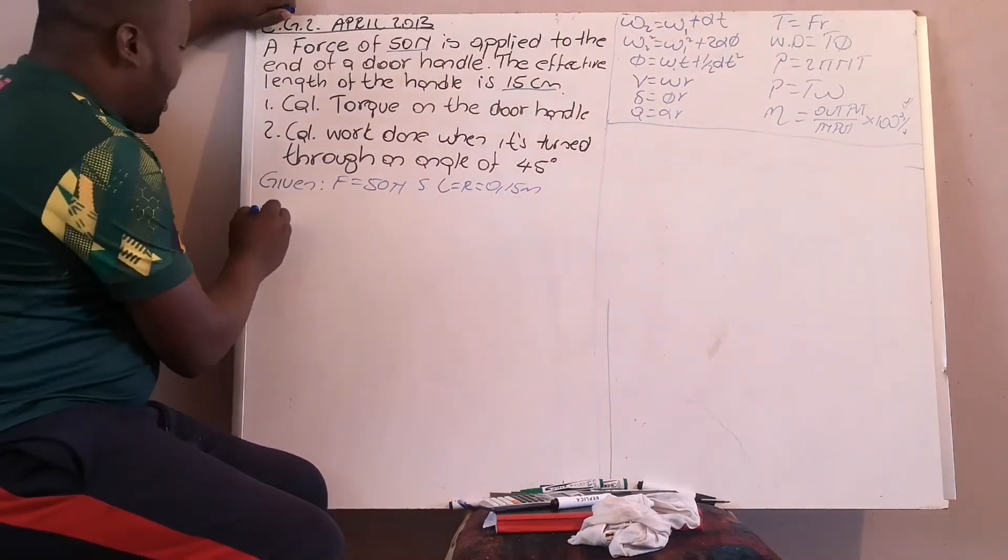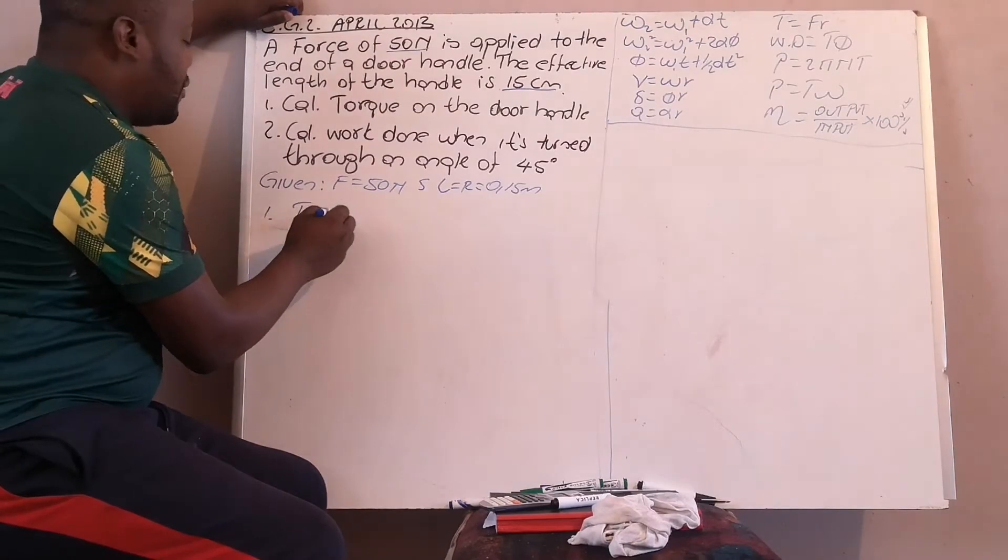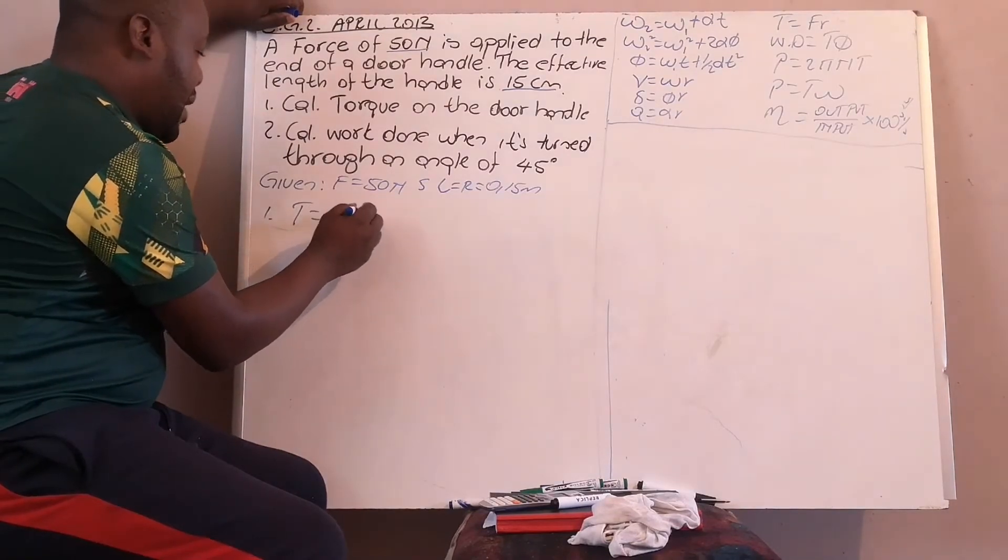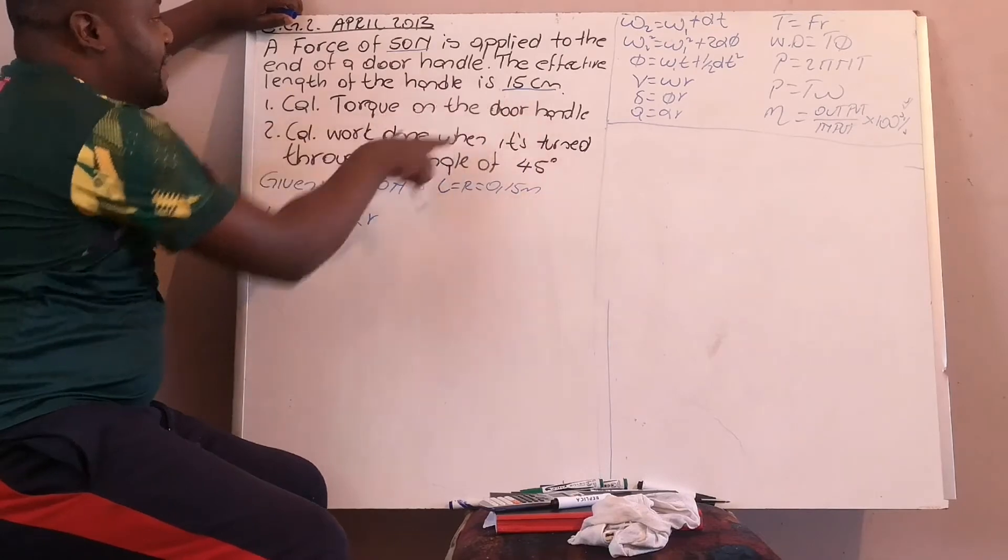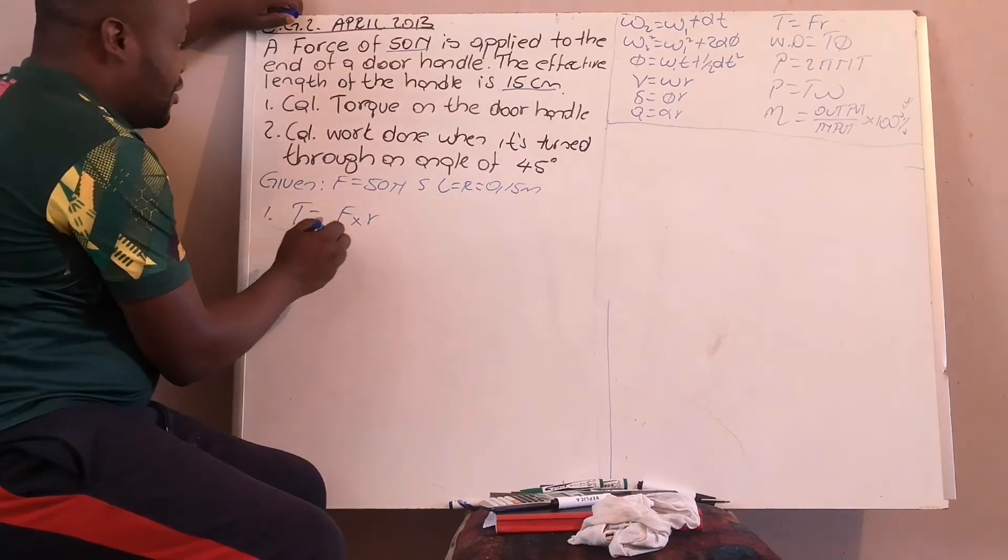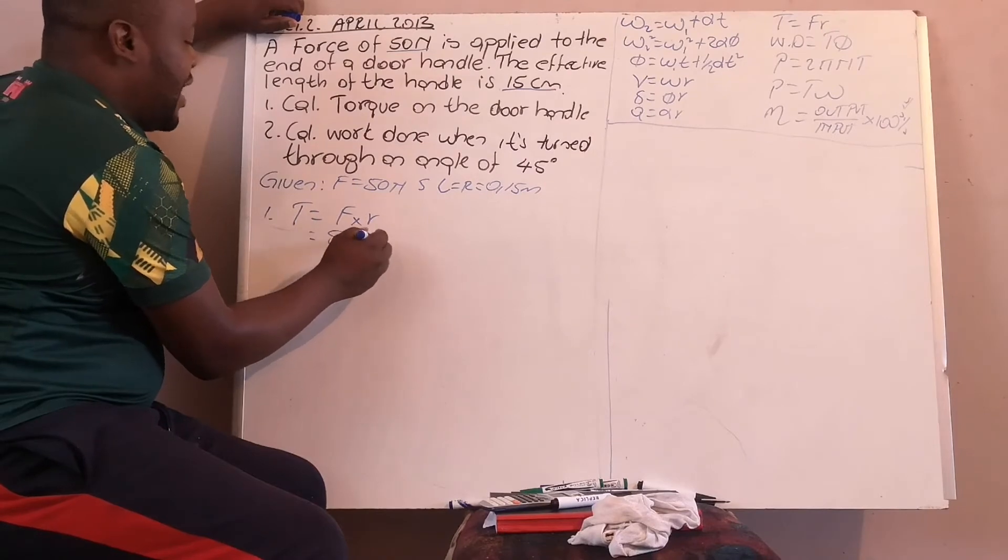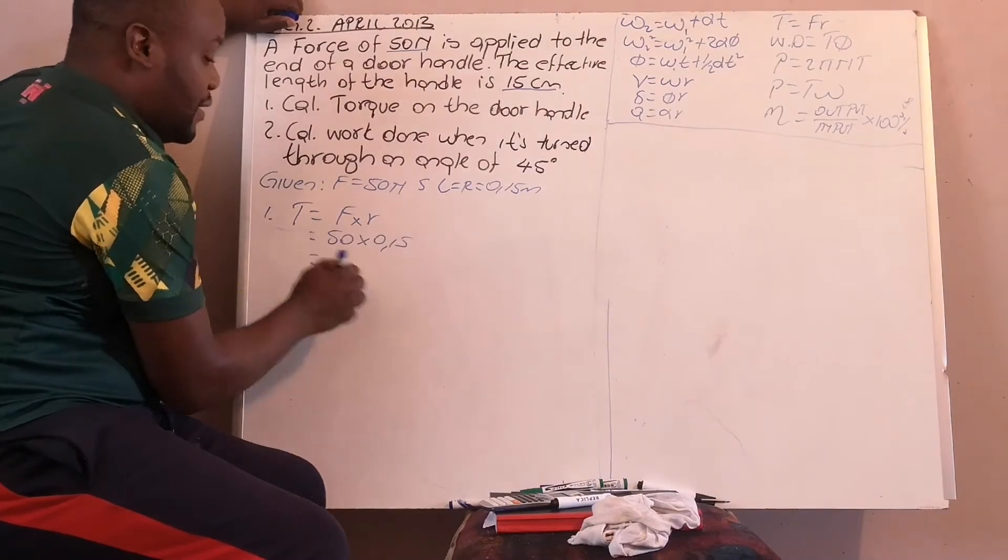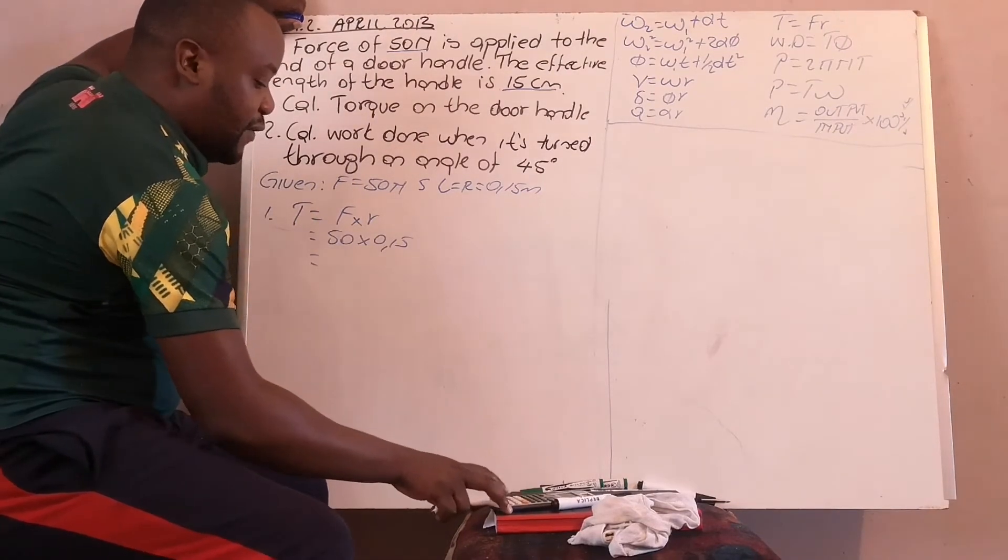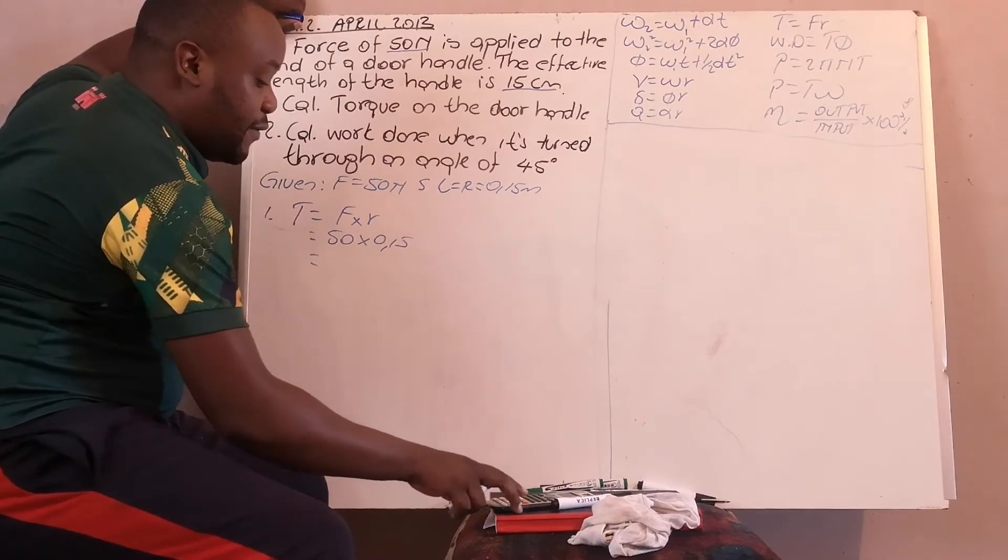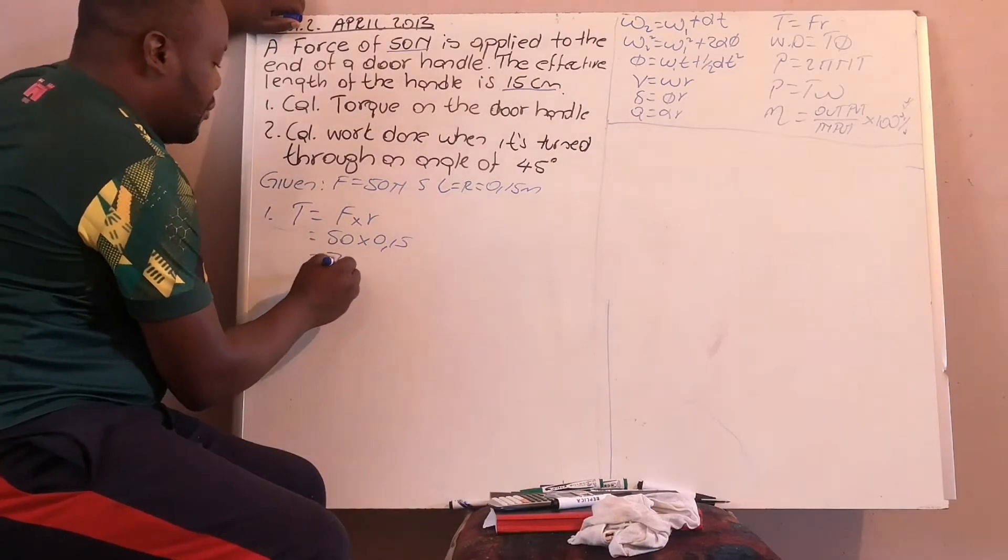So number one, your torque is equal to force multiplied by your radius. So your torque will be 50 multiplied by 0.15. Your torque is 7.5 newton meters.